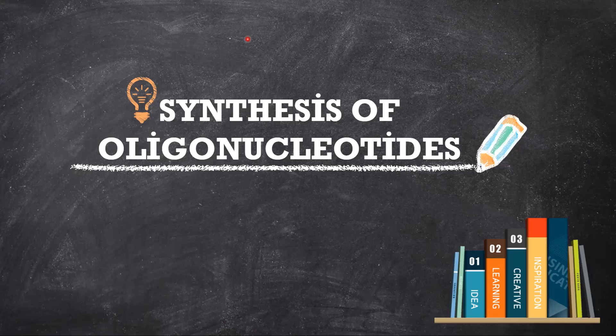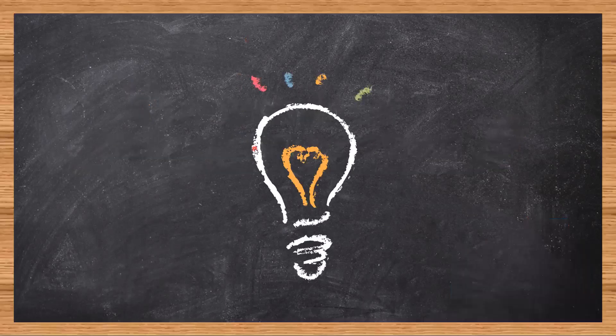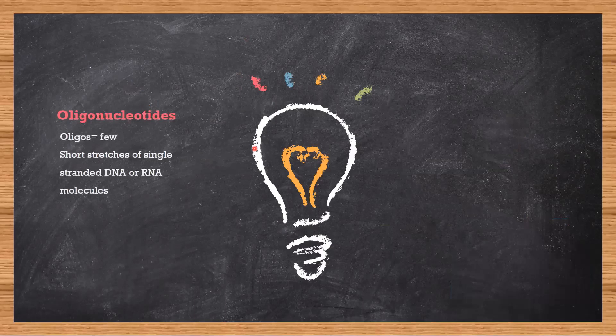Hey Archie's, welcome to another video. Today we will be discussing the chemical synthesis of oligonucleotides by the phosphoramidite method. First, you need to understand a few terms. What is an oligonucleotide? Oligo means few, so these are basically short stretches of single-stranded DNA or RNA molecules.